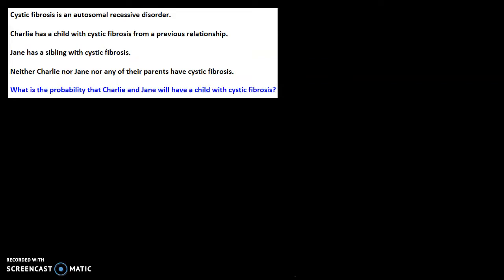So this question is basically the same as the question in the previous video, except this time we've been told that Charlie has a child with cystic fibrosis from his previous relationship. That is the only difference in this question.